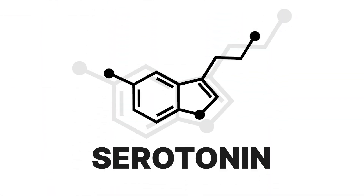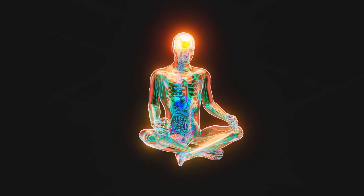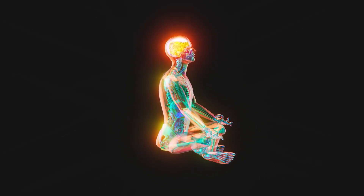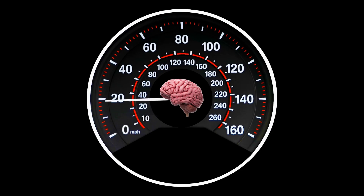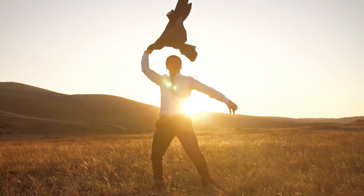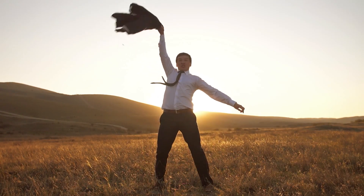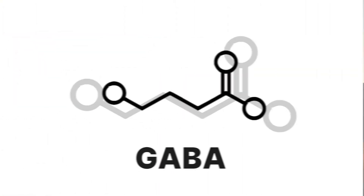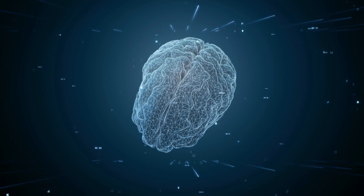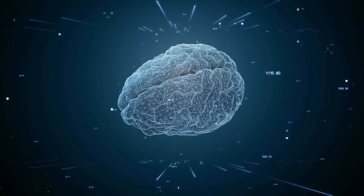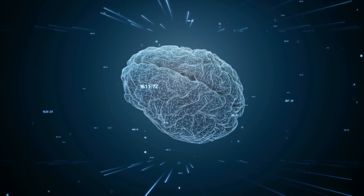Serotonin is another prominent neurotransmitter, serving an all-important role as the brain's mood stabilizer. Another major neurotransmitter is glutamate — think of it as the brain's accelerator pedal, involved in excitatory signaling, which means it revs things up. On the flip side, we have GABA, the brain's calming neurotransmitter. When GABA levels dip, it can lead to excessive brain activity, potentially triggering hallucinations.